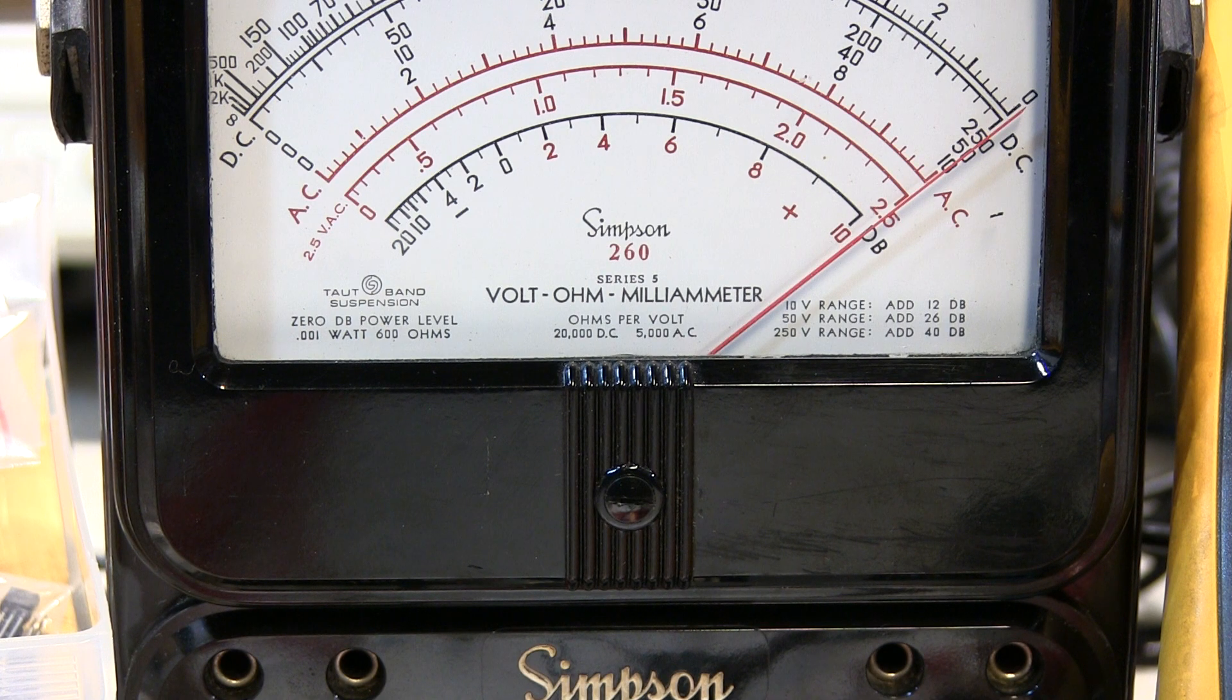So if you have it on a 10 volt scale, there's 200,000 ohms in series with the meter movement. So the input impedance of the meter is 200,000 ohms, 200k ohms.